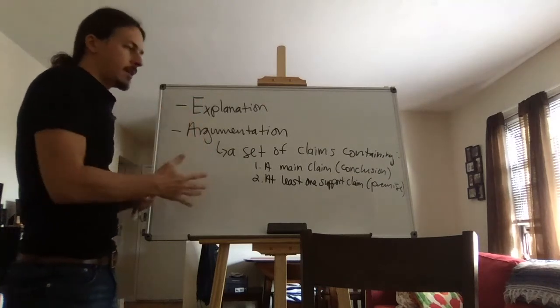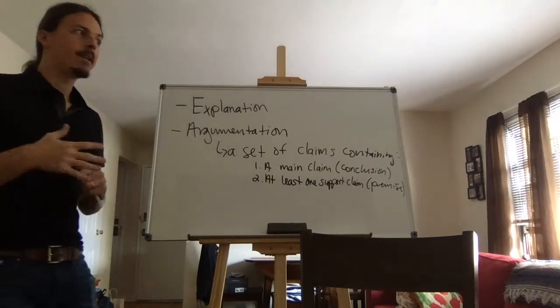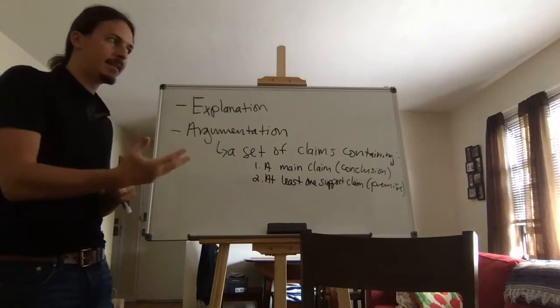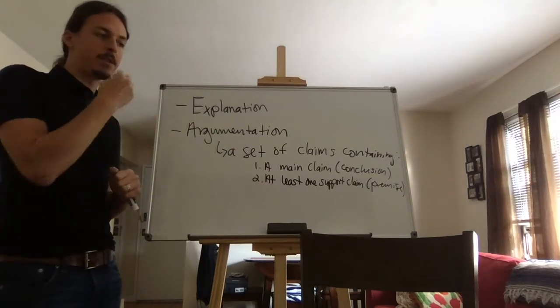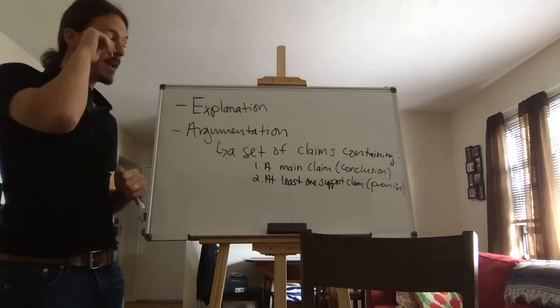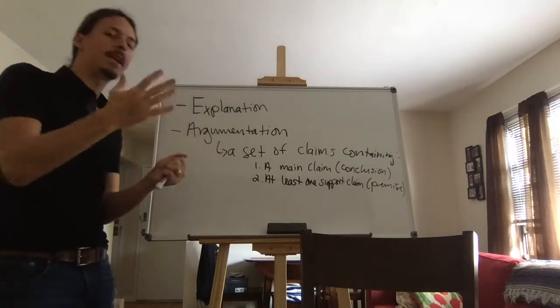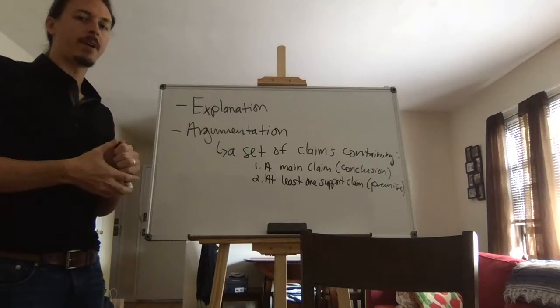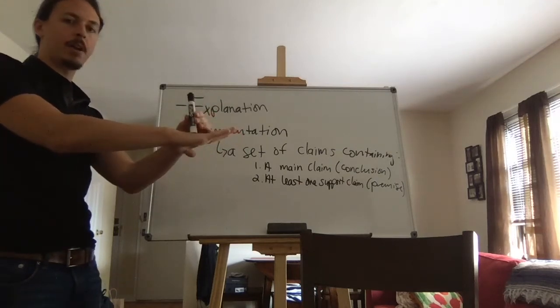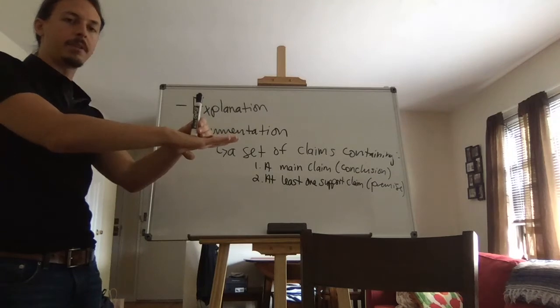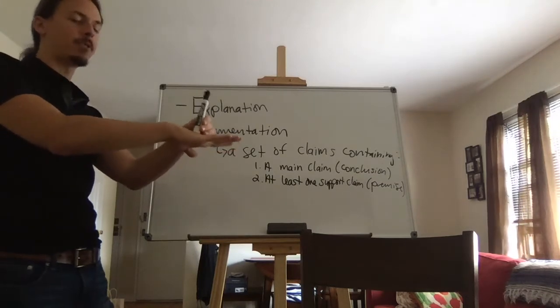First and foremost, what is a claim? Well, a claim is any declarative sentence. It's any kind of utterance, something you say or something you write down, that's capable of being true or false. So if I were to tell you, this marker is on top of my hand right now, that's a claim. Because it is capable of being true or false, and it happens to be true.